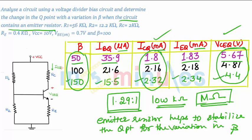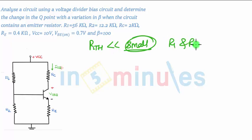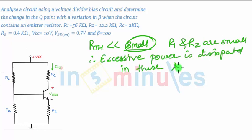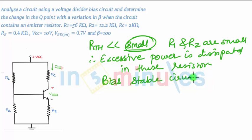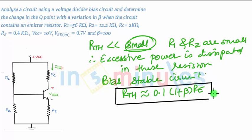We are changing the value of beta but the Q point is more stable in this case. One more thing: if the value of RTH is very small, then R1 and R2 are small and therefore excessive power will be dissipated in these resistors. To avoid this, we use a bias-stable circuit for which RTH is 10% of the value — that is, RTH equals 0.1 times (1 + beta) times RE. This relation is used in design problems where we need to find R1 and R2, and the RE value is specified in the question.